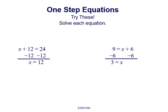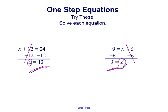Subtracting 12 in the first equation isolates the variable on the left, and 24 minus 12 on the right gives us our solution of x equals 12. Subtracting 6 in the second equation isolates x on the right. On the left, 9 minus 6 gives us our solution of 3, so 3 equals x.